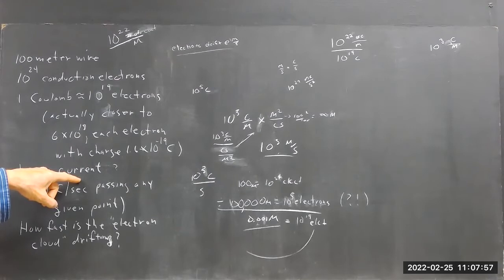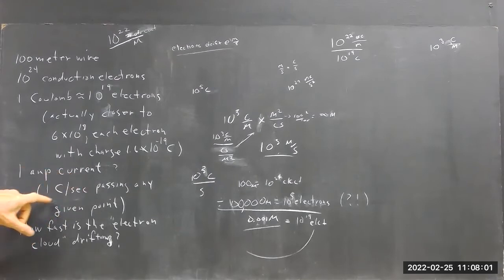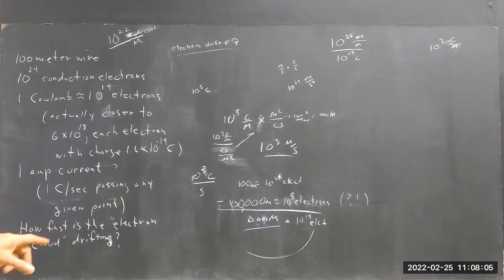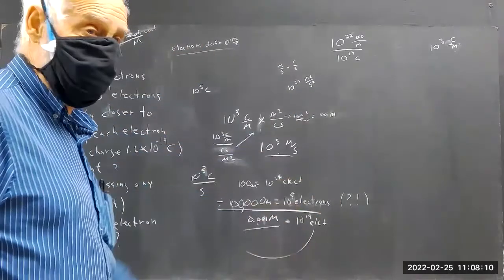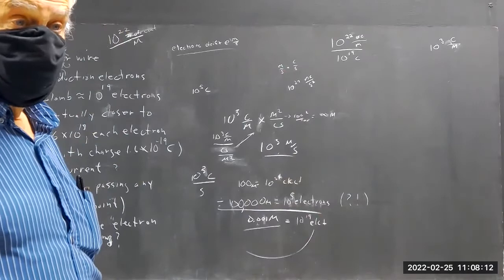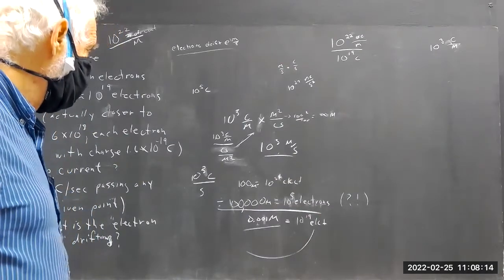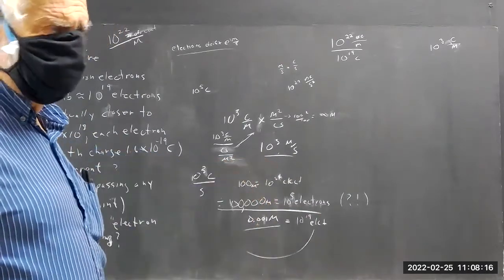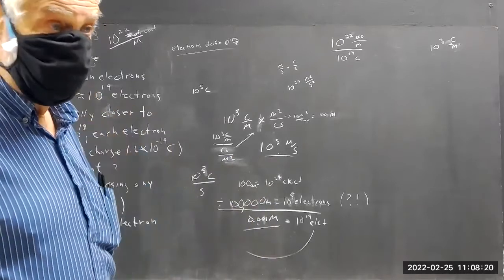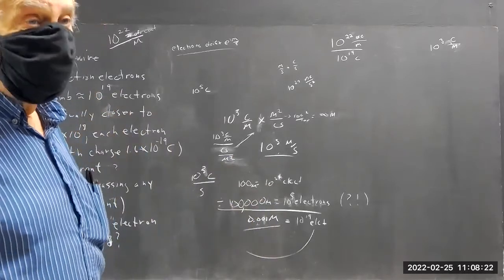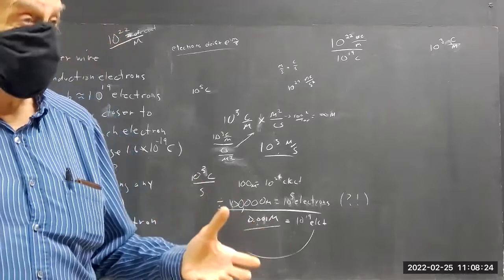If we have a one-amp current, that means there's one Coulomb per second passing any given point. How fast is the electron cloud drifting? Well, people try to reason this out using units. One answer you might get is 10 to the fifth meters per second — but you have to think: that doesn't make sense. When you get an answer and it doesn't make sense, you need to recognize that.